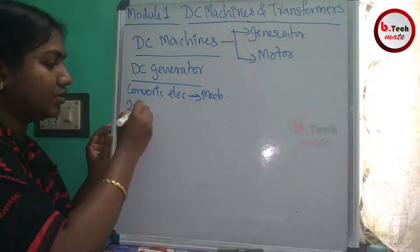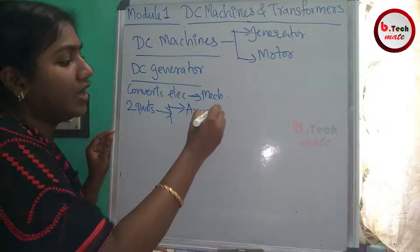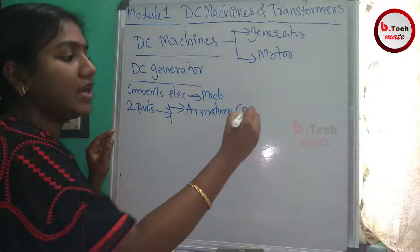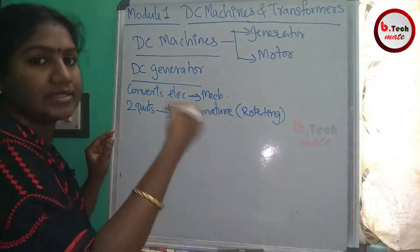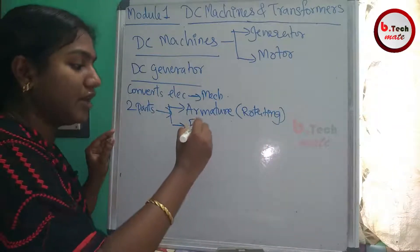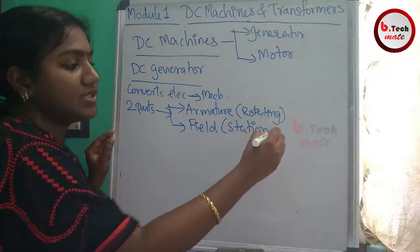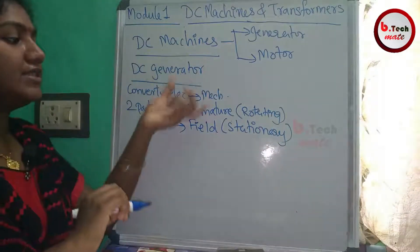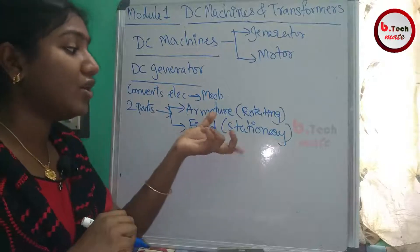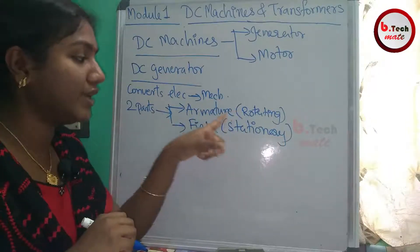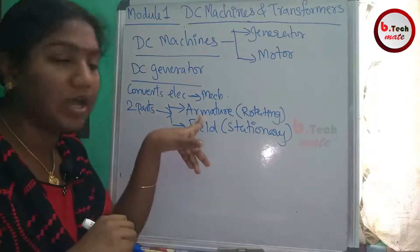There are two main parts of DC Machines. One is the field and the other is the armature — the working operating part. When the armature cuts the magnetic flux, an EMF is induced in the armature.